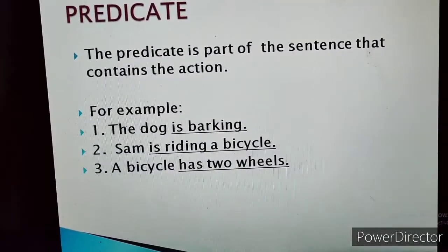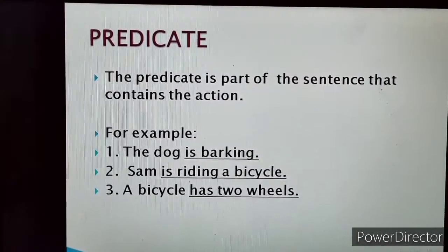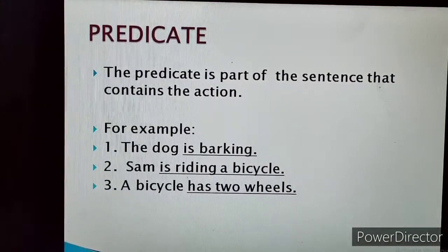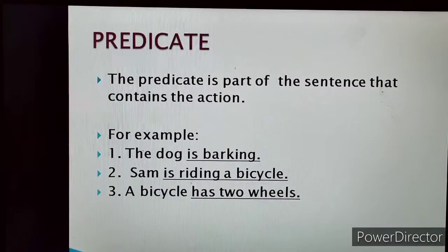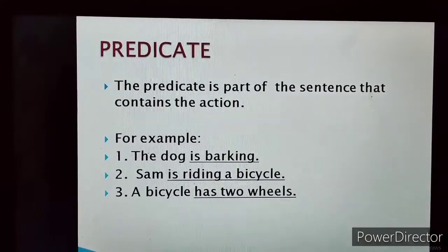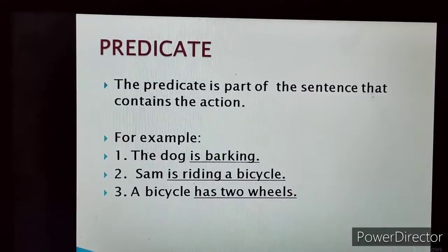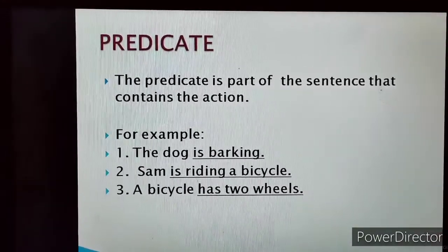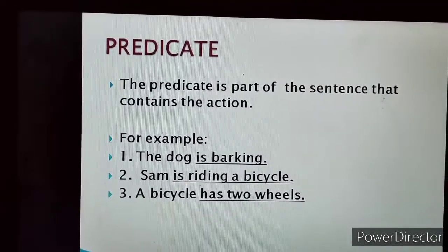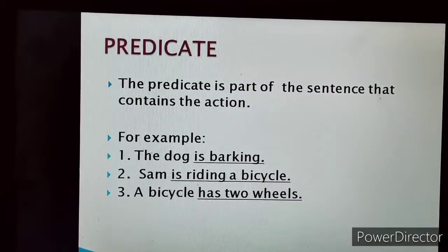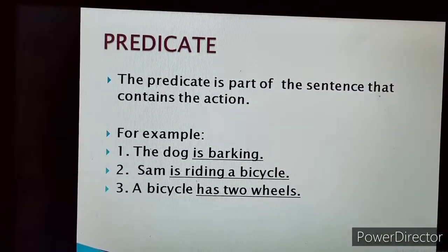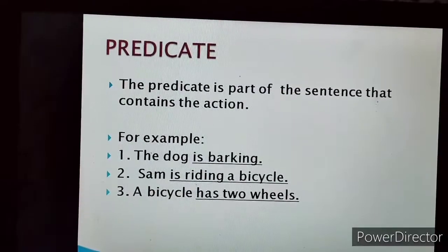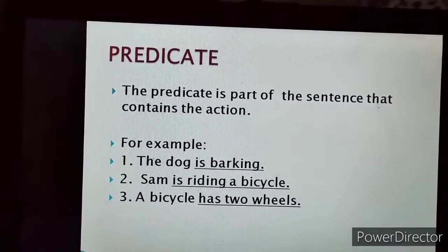The action which is being done by the dog will be the predicate. Which action is being done by the dog? The dog is barking — so 'is barking' will be the predicate. In the second sentence, Sam is riding a bicycle — which action is being done by Sam? He is riding a bicycle, so the predicate part is 'is riding a bicycle.' Similarly, in the third sentence, a bicycle has two wheels — so 'has two wheels' will be the predicate.